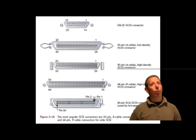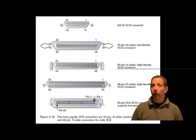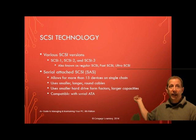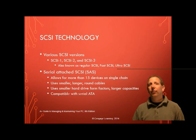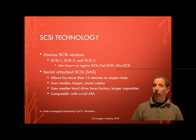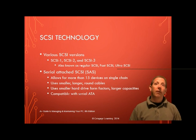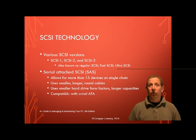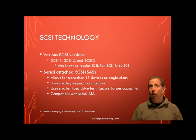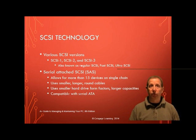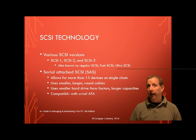The SCSI bus can support more than one type of connector and can use connector adapters. For best results, you should always plug a device into the last connector on the cable. The three major versions of SCSI are SCSI-1, 2, and 3, commonly known as regular SCSI, fast SCSI, and ultra SCSI. A variation of SCSI is Serial Attached SCSI, or SAS, which allows more than 15 devices on a single SCSI chain, uses smaller, longer round cables, and supports large-capacity hard drive form factors. SAS can be compatible with SATA drives in the same system and claims to be more reliable and better performing than SATA itself.